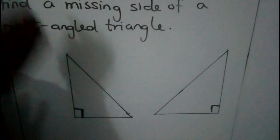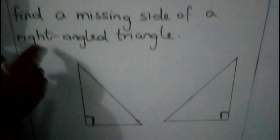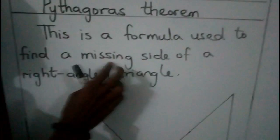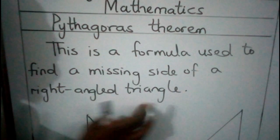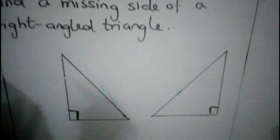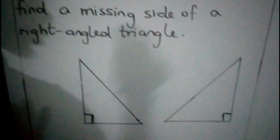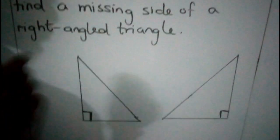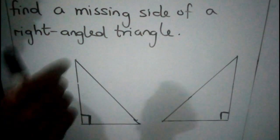So I repeat — it is a formula used to find a missing side of a right-angled triangle, one of the sides of a right-angled triangle.